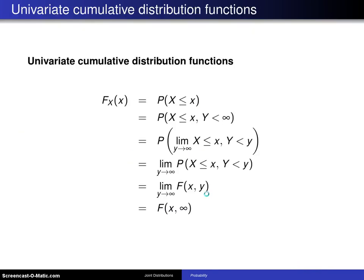One thing that is of interest is how do you go from having a joint cumulative distribution function to a univariate cumulative distribution function. If you wanted the CDF of x alone, by definition, that's the probability X is less than or equal to x. I can add on the condition Y is less than infinity. That's not changing that probability statement.